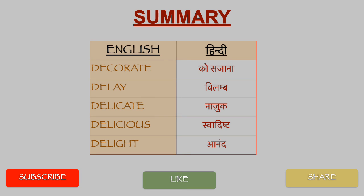Let's revise the words that we learnt today in English and Hindi. Decorate - sajana. Delay - vilumb. Delicate - naazuk. Delicious - swadisht. Delight - anand.